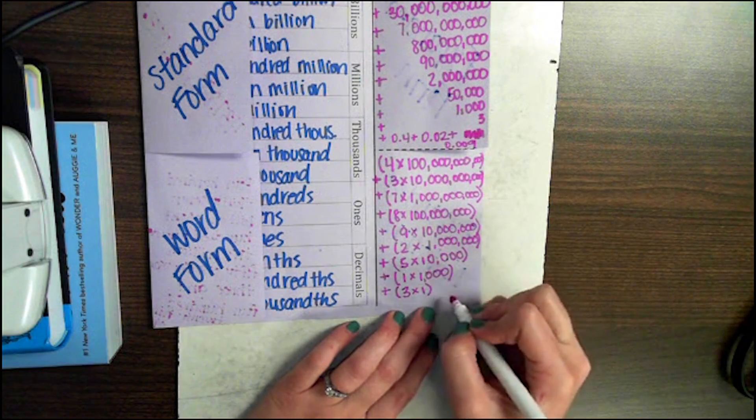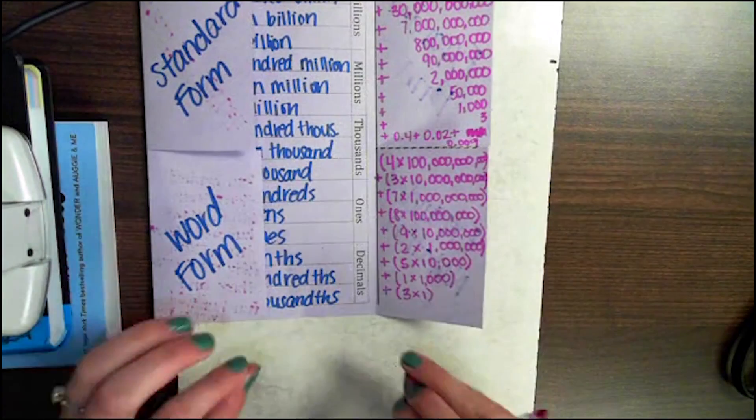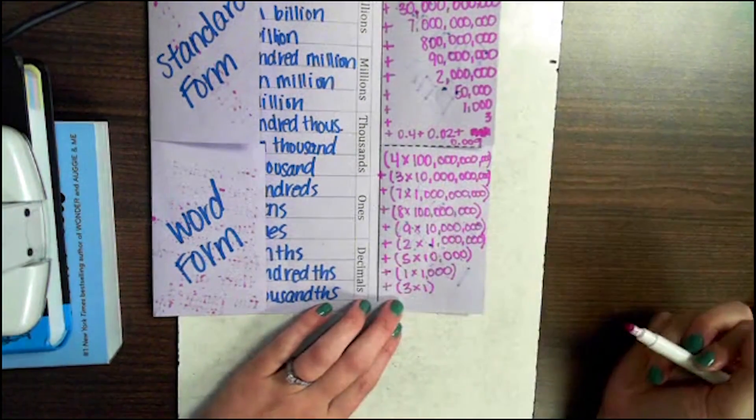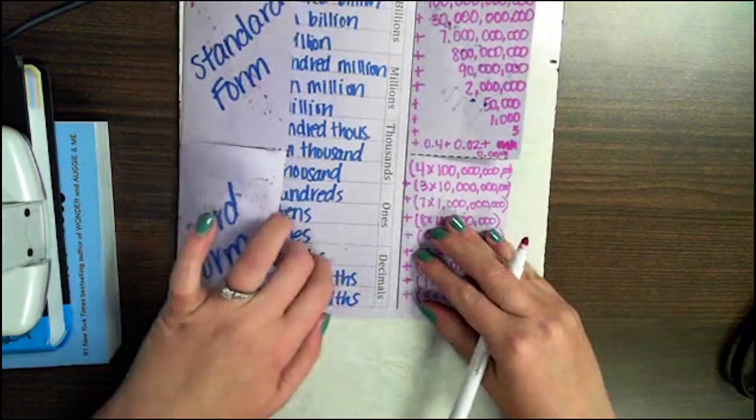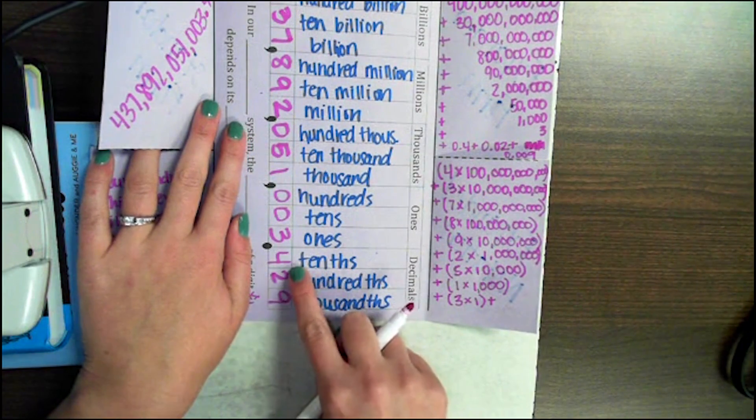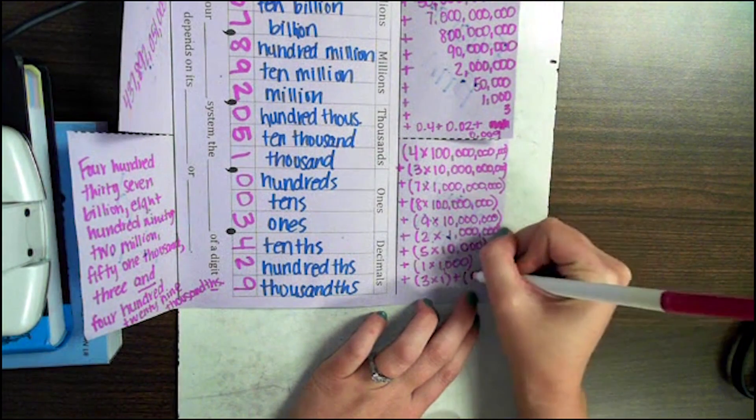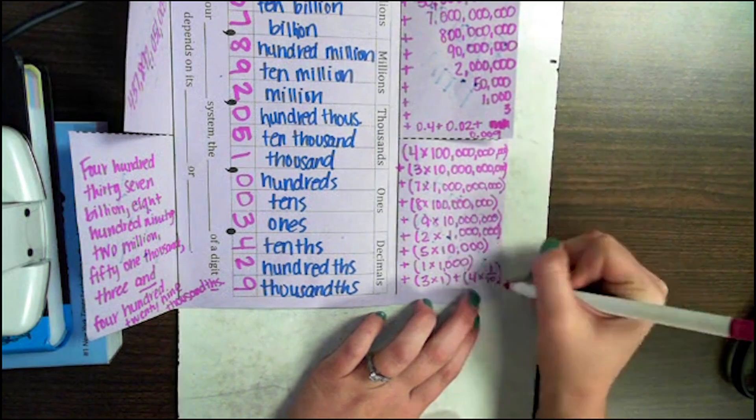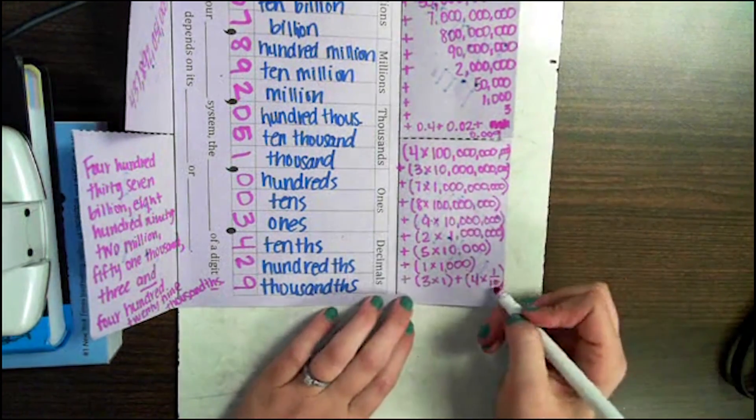When we do this as a decimal, in the decimals place, we can either do expanded notation as a decimal or a fraction. I'm going to show you as a fraction, since we did decimals up in expanded form. So our 4 in the tenths place, we're going to represent that as 4 times 1 tenth. You can also write 1 tenth as a decimal, so you can see it written either way.